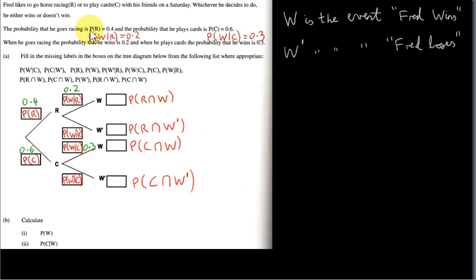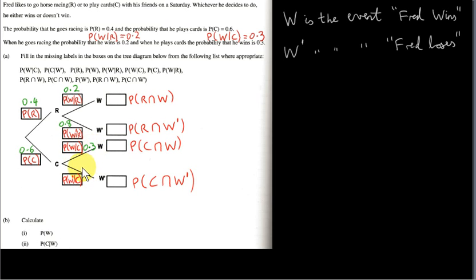Let's fill in values. We have P(R) = 0.4, P(C) = 0.6, P(W|R) = 0.2, and P(W|C) = 0.3. Suppose Fred races — there are two options, he wins or loses. He wins with probability 0.2, which means he loses with probability 0.8, since these must add up to 1. Similarly, when he plays cards he either wins or loses, so those probabilities must sum to 1. Since P(W|C) = 0.3, P(W'|C) must be 0.7.